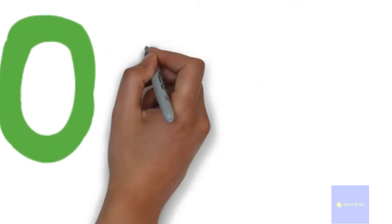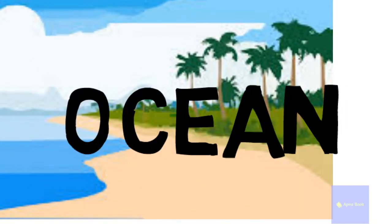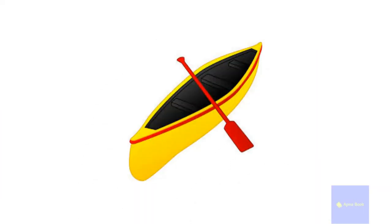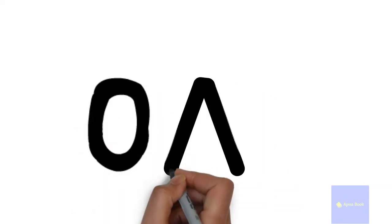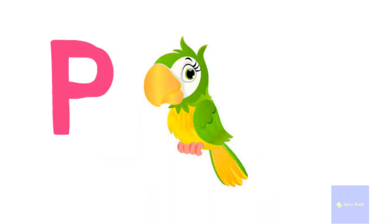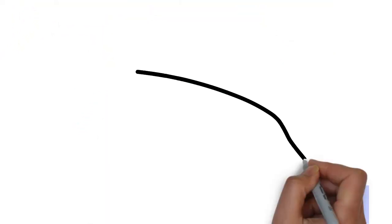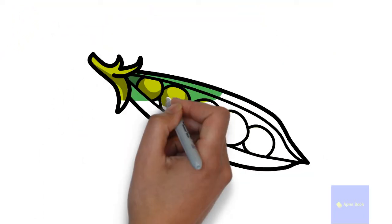O for ocean, O for oar. P for parrot, P for peanut.